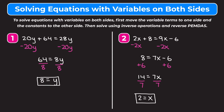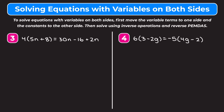Let's take a look at some harder examples. Example 3 is 4 times the quantity of 5N plus 8 equals 30N minus 16 plus 2N. There's a lot going on, so we start by distributing the 4 on the left side: 4 times 5N is 20N, and 4 times 8 is plus 32. On the right side, we combine like terms: 30N plus 2N gives us 32N minus 16.